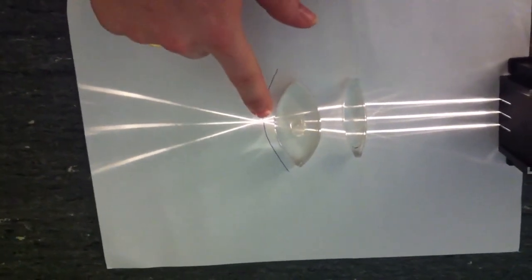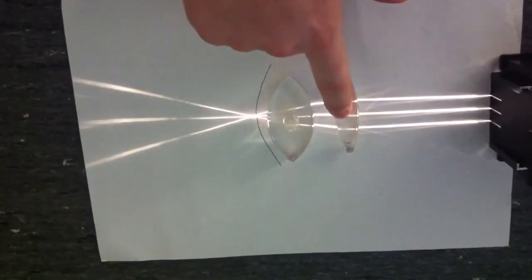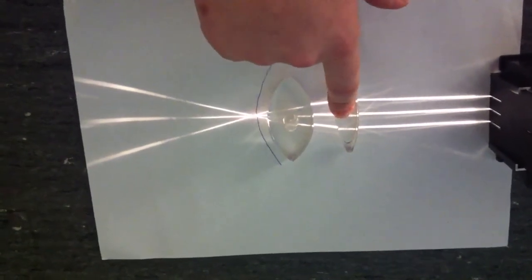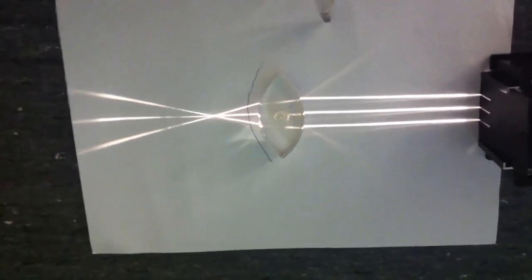And now, this light is nicely focused on the retina where it should be. So a convex lens helps to correct long-sightedness.